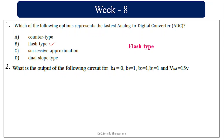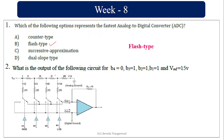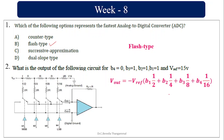What is the output of the following circuit? They have given an R-2R ladder structure. The formula is: output = minus V_reference times (B1 × 1/2 + B2 × 1/4 + B3 × 1/8 + B4 × 1/16). Here B4=0, B3=B2=B1=1 and V_reference=15. So the value is minus 15 times (1/2 + 1/4 + 1/8). Taking LCM as 8, that is minus 15 times 7/8, giving minus 13.125.